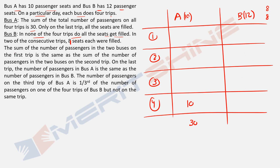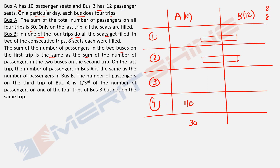Now the combined data: the sum of passengers in both buses on the first trip equals the sum on the second trip. So the sum of Bus A Trip 1 and Bus B Trip 1 equals the sum of Bus A Trip 2 and Bus B Trip 2. Also, on the last trip, the number of passengers in Bus A equals the number in Bus B — Bus A Trip 4 is 10, so Bus B Trip 4 also becomes 10.